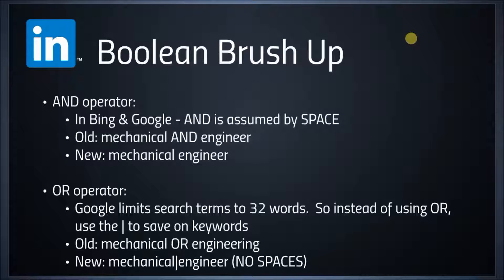Moving on to the OR operator: since Google limits search terms to 32 words, you want to maximize your search. Instead of typing the word OR, use the pipe bar character to save on keywords. The bar command takes the place of OR and is usually found right above the Enter key on a standard keyboard. The old method was to type mechanical OR engineer; the new method in Google is mechanical bar engineer, no spaces, which brings back any result with mechanical or engineer.